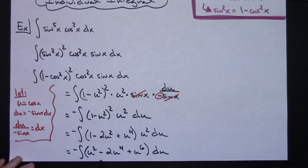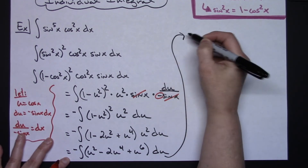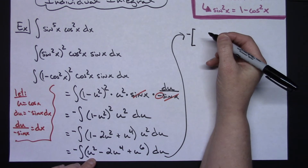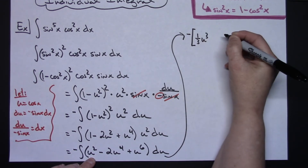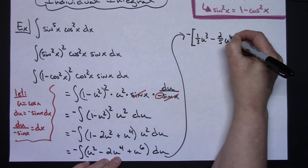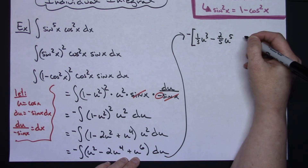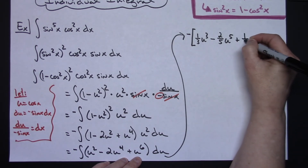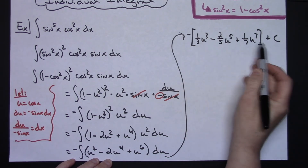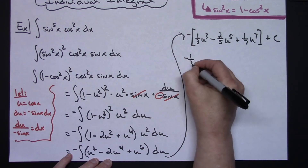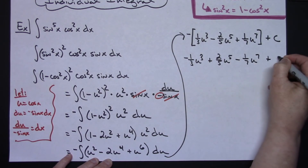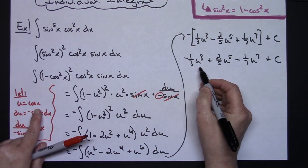Now we're at a straight polynomial and we just do straightforward integration. The negative remains out front. Adding one to each exponent: one-third u cubed, minus two-fifths u to the fifth, plus one-seventh u to the seventh. Distributing the negative through gives us negative one-third u cubed plus two-fifths u to the fifth minus one-seventh u to the seventh, plus C.